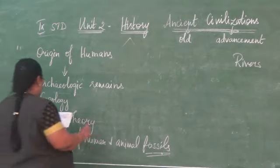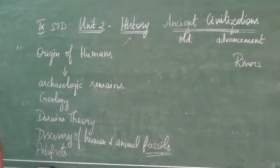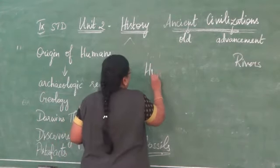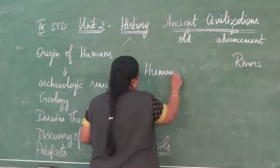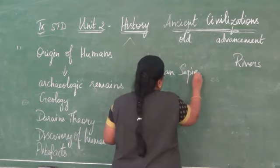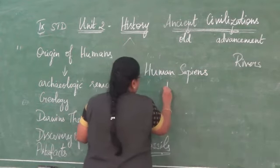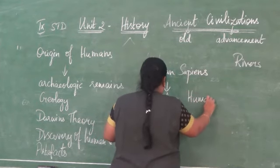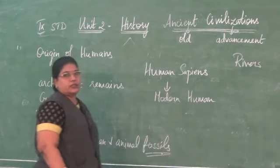Human ancestors are divided into various species according to their physical features: hominid, hominens, homo erectus, homo habilis, and homo sapiens. Homo sapiens are the most modern human beings whom we see today, so they are called modern humans. Modern humans emerged some 3 lakh years ago in Africa.